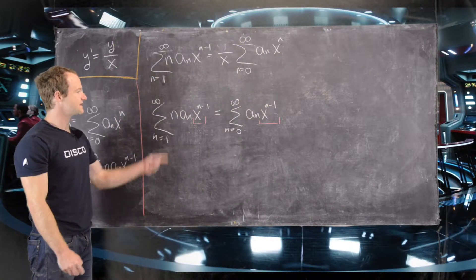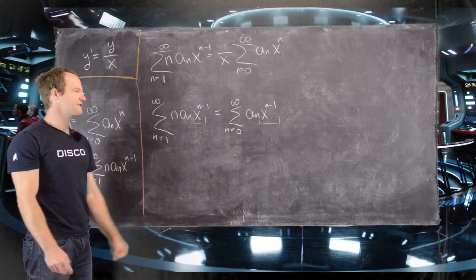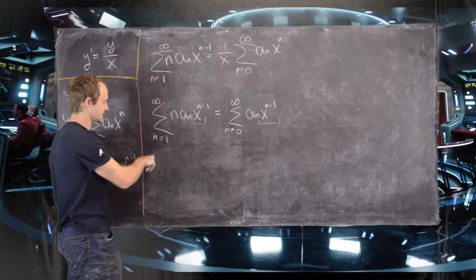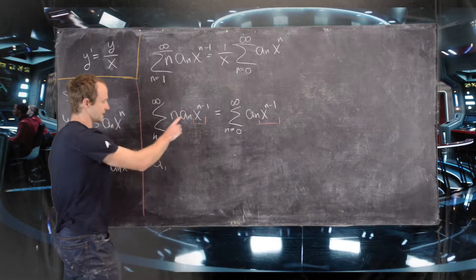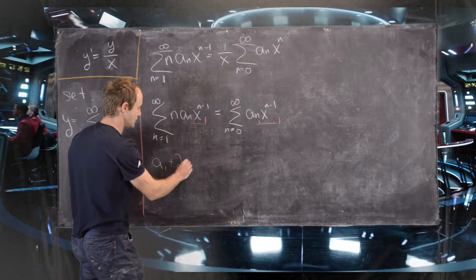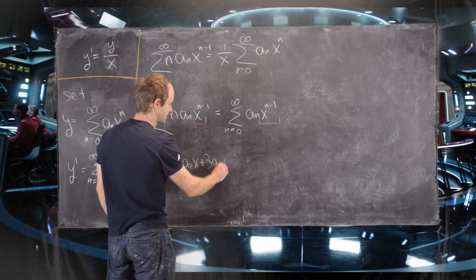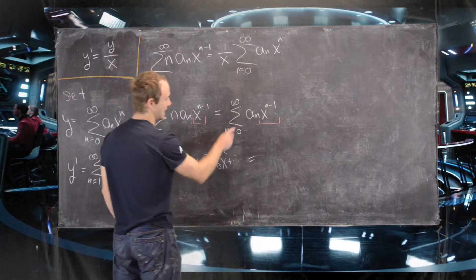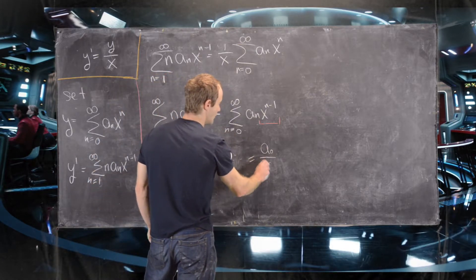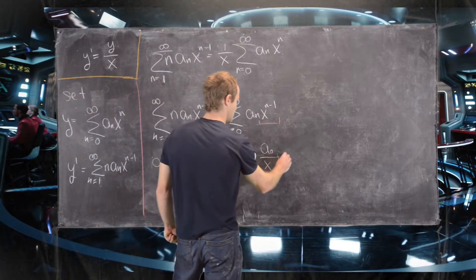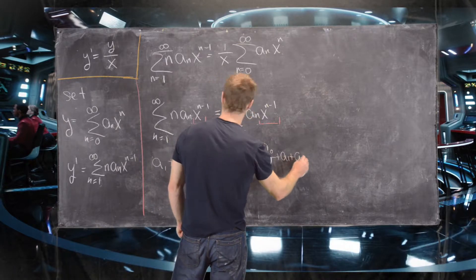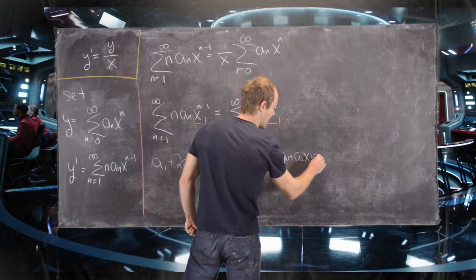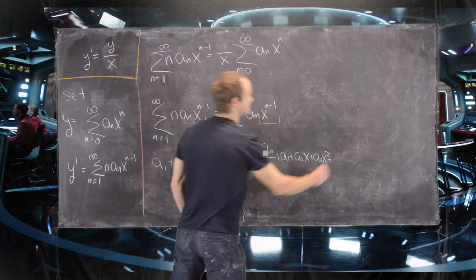To get a clearer picture, let's write out a few terms and see what equating coefficients looks like. On the left-hand side we have: a sub 1 plus 2 a sub 2 x plus 3 a sub 3 x squared, and so on. On the right-hand side we have: a sub 0 over x plus a sub 1 plus a sub 2 x plus a sub 3 x squared, and so on.